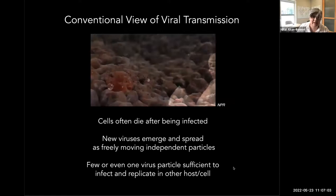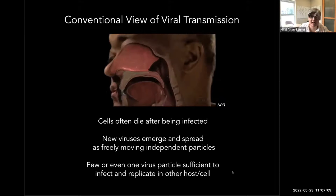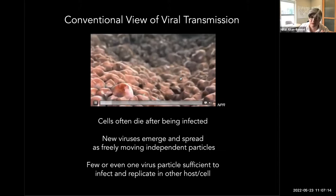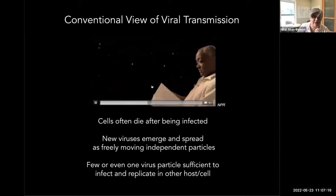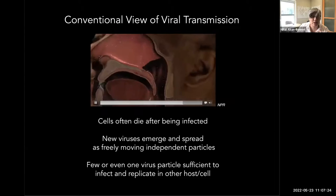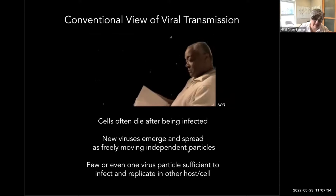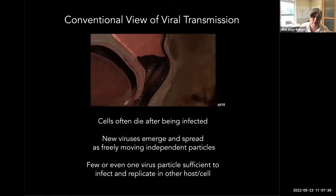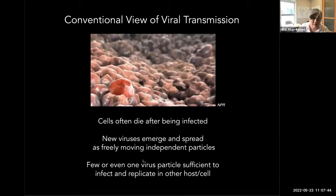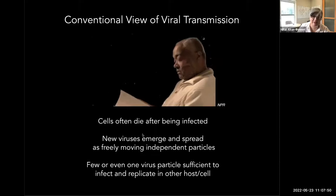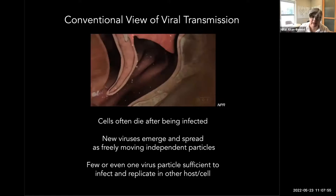Our interest in transmission strategies started about 10 years ago, when we started to think about the conventional view of viral transmission. In this view, a cell gets infected by a virus — typically one or two viruses are sufficient — the virus replicates in the cell, and cells often die either by lysis or apoptosis. The new viruses emerge and spread as freely moving independent particles to other hosts, and this movement of virus particles independently from one another is thought to confer an advantage, allowing them to spread far and wide.